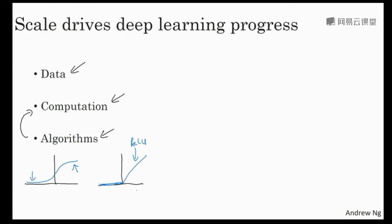And so the gradient is much less likely to gradually shrink to zero. And the gradient here, the slope of this line is zero on the left. But it turns out that just by switching from the sigmoid function to the ReLU function has made an algorithm called gradient descent work much faster. And so this is an example of maybe a relatively simple algorithmic innovation. But ultimately, the impact of this algorithmic innovation was it really helped computation.